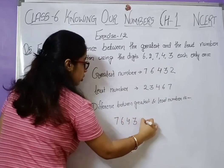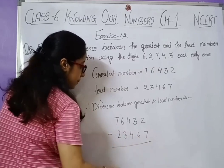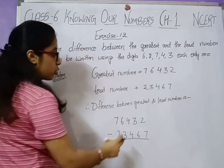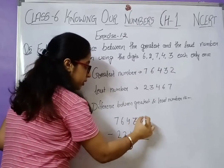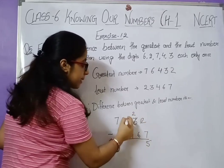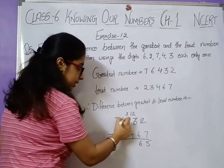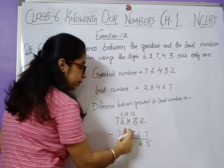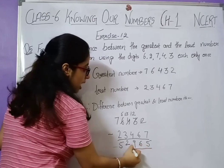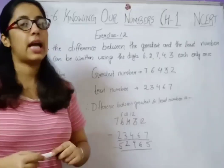The smallest number is 23,467. Now subtract: 76,432 minus 23,467. Working through the subtraction with borrowing where needed — 7 minus 2 is 5. Therefore, the difference between the greatest and least number is 52,965.